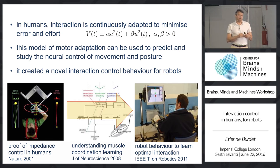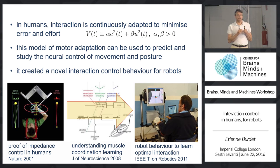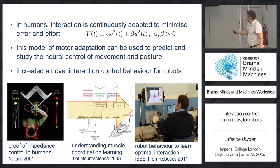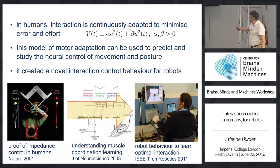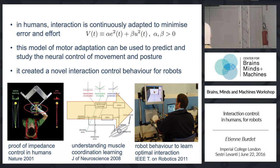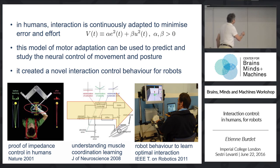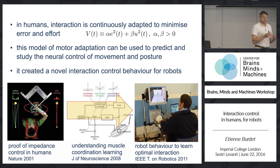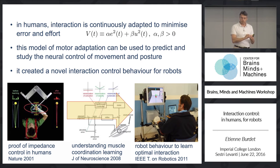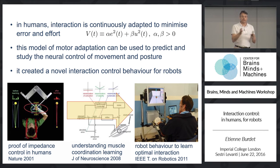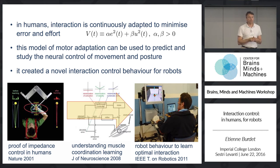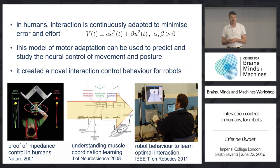We use this algorithm for rehabilitation: you have a patient training with a robot, with human adaptation, and we put human-like adaptation in the robot. This adaptation is based on minimization of effort, and we make the robot a bit more lazy than the human, so that the human has to be active. That's the key for learning in rehabilitation — and for learning in general.